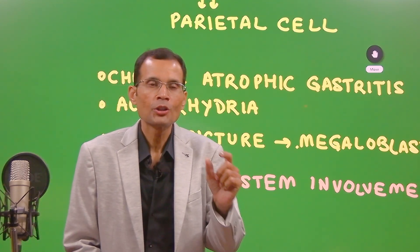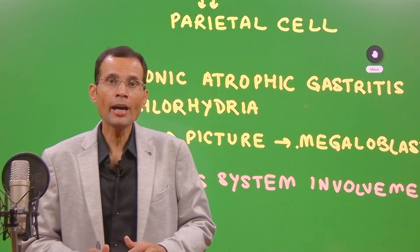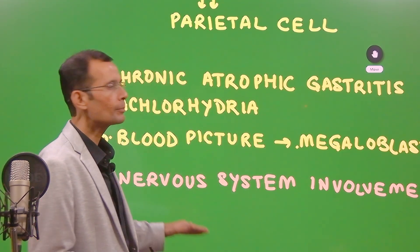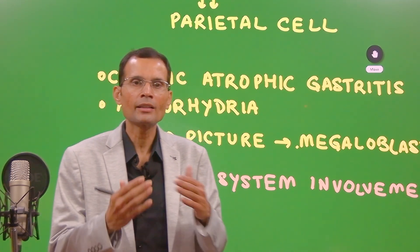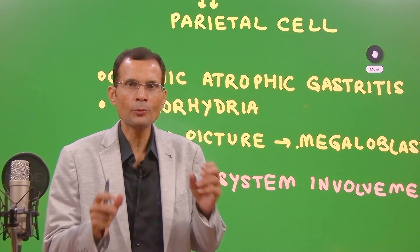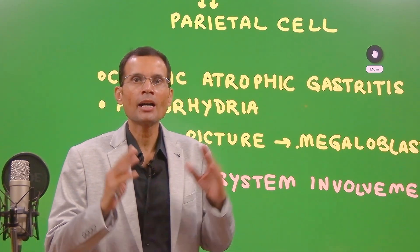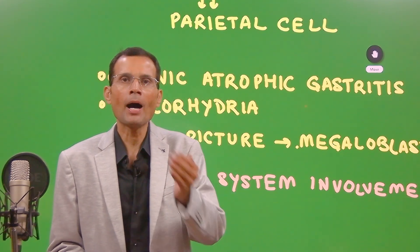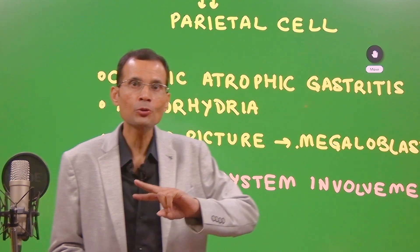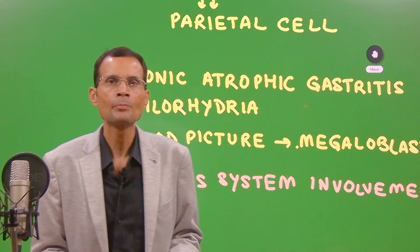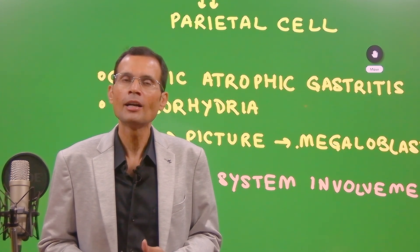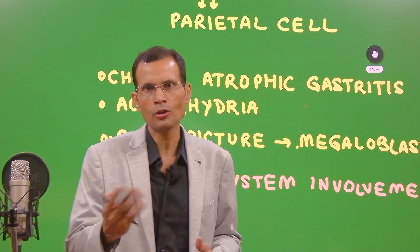Coming to the important part — nervous system involvement. This is where you differentiate between megaloblastic anemia and pernicious anemia. Pernicious anemia has nervous system involvement: peripheral neuropathy and the symptoms associated with it. If asked what is the difference between pernicious and megaloblastic anemia, pernicious anemia is a larger term — an autoimmune disease — and part of it can be megaloblastic anemia. The patient will have megaloblastic anemia plus nervous system involvement. Megaloblastic anemia independently can occur without autoimmune involvement, just from B12 deficiency in the diet or similar reasons.